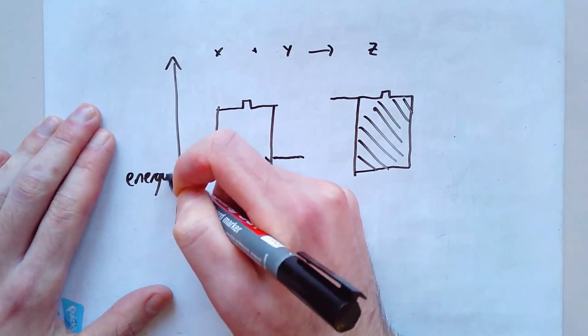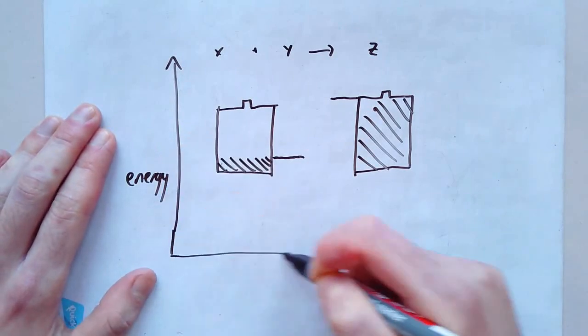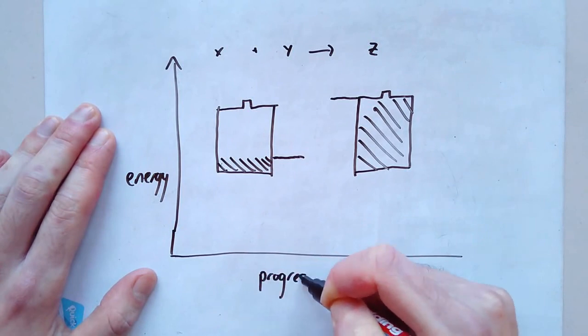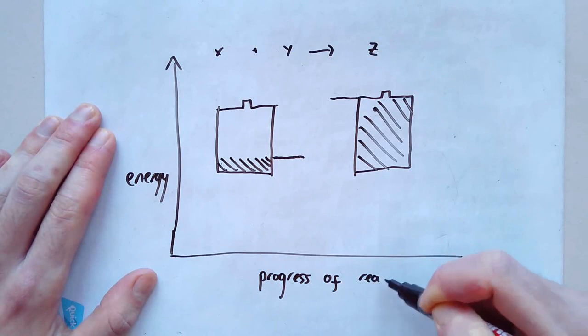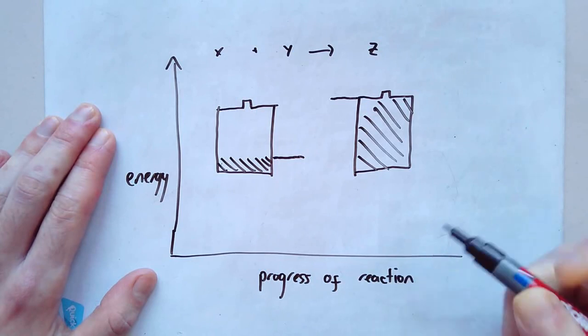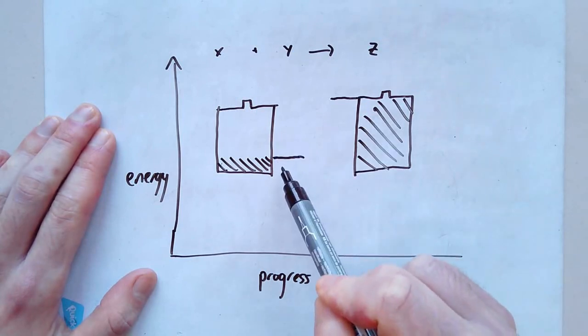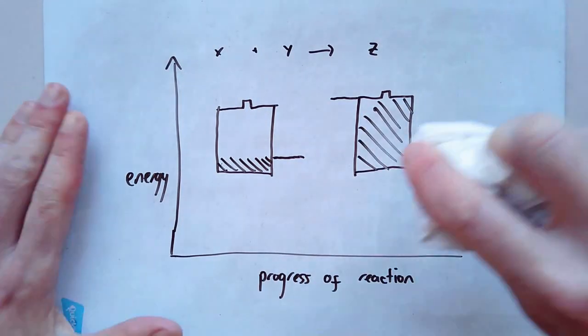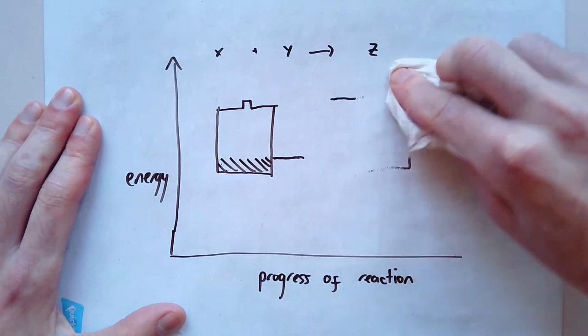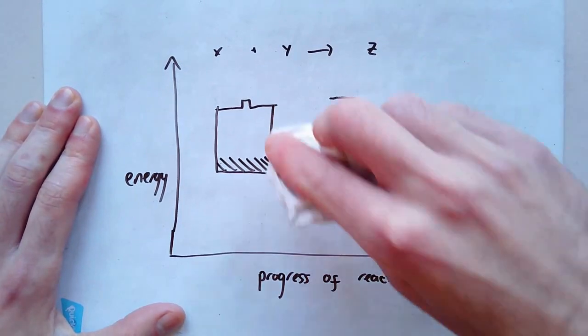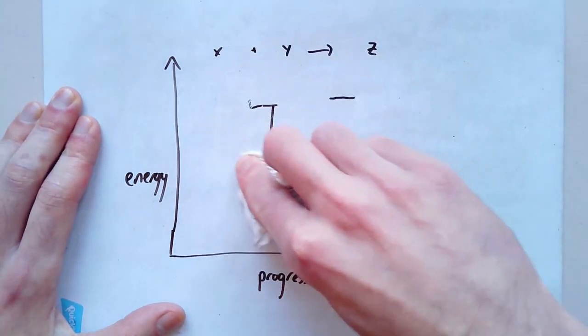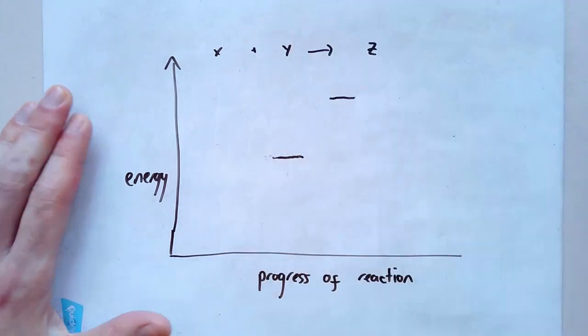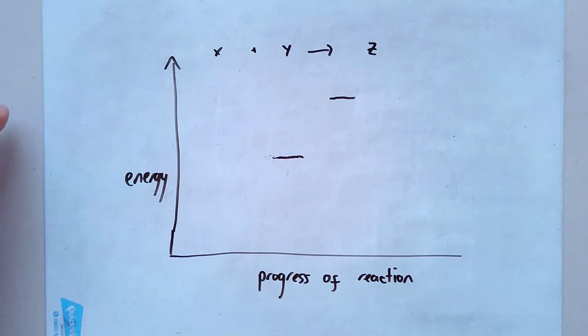And sometimes you'll see along the bottom, it'll say progress of reaction. All that means, progress of reaction, all that means is that X and Y are turning into Z. And reactants are turning into products. Nothing more complicated than that. I'm going to rub out my batteries. Because remember, the batteries is just like, it's called a model. It's just a way for me to help you understand what's going on here. But you don't really need to think of it as anything that's actually true. There aren't little batteries sat in the chemicals.